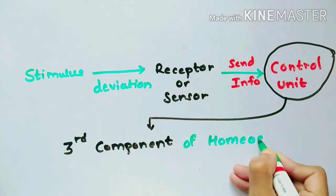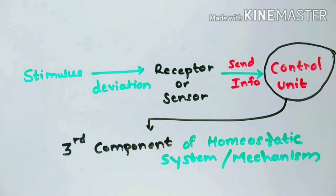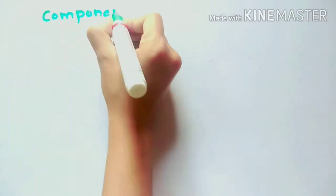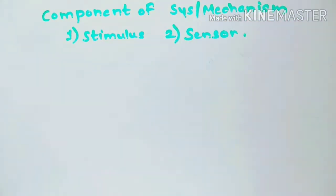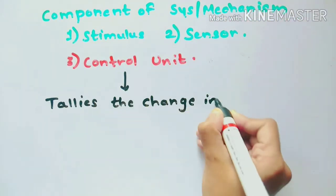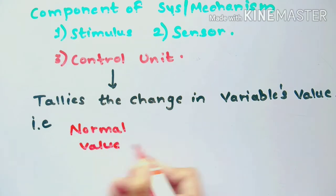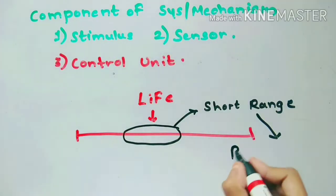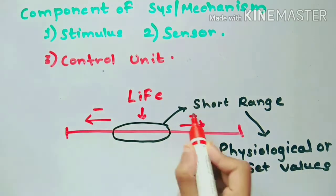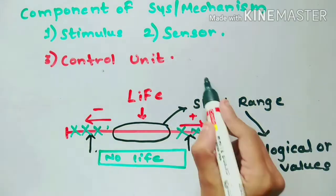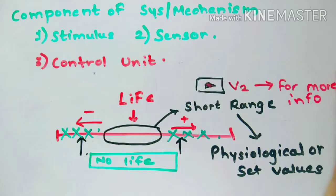The control unit is our third component of homeostatic system. The control unit tallies the change value to its normal value. As you all know, life is possible within a short range of values. We call it as physiological limits or set limits. Beyond these limits, life is not possible.